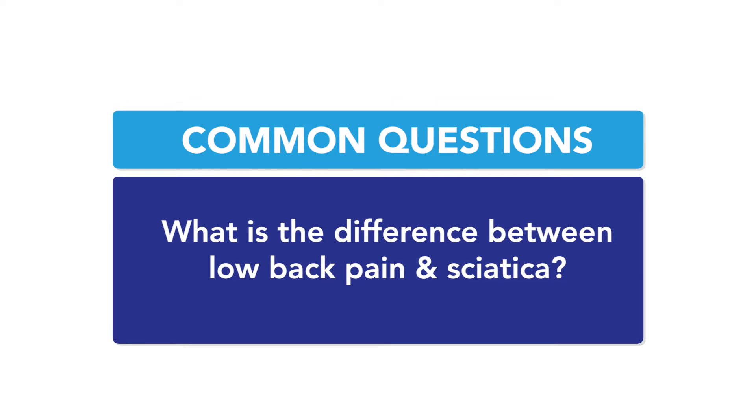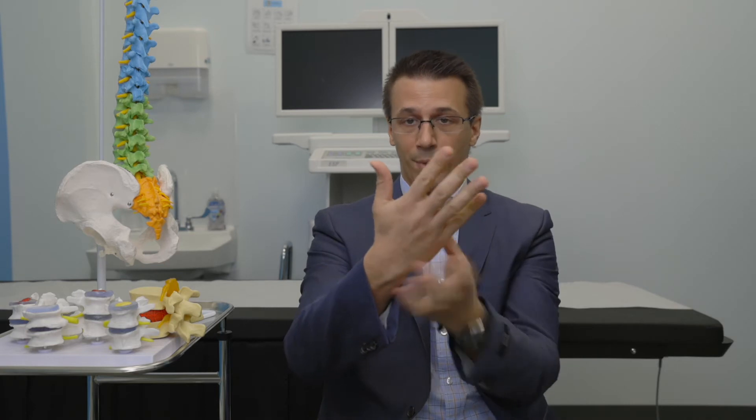What is the difference between low back pain and sciatica? That's an excellent and really common question. The sciatic nerve is the biggest nerve in our body — it's the size of a thumb. It starts in the glutes, but it has five roots: L4, L5, S1, S2, and S3. They come together out of the spine to form this big nerve in the glutes going down the leg. Sciatica is leg pain that starts from the glutes going down.